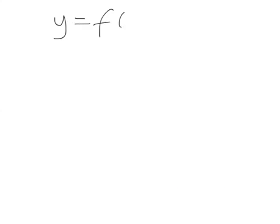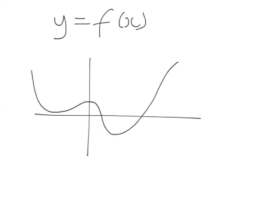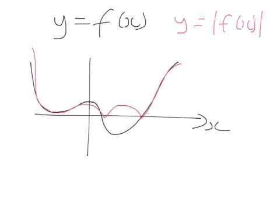To generalise: if we've got y equals f(x) and it looks a certain way, then the graph of y equals mod f(x) is the same graph but the negative parts are reflected in the x-axis. Not the best diagram, but hopefully you get the idea.